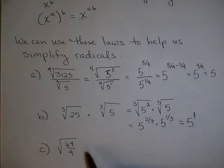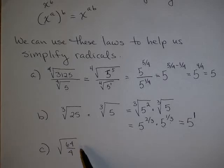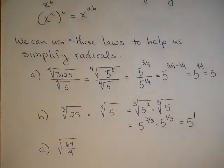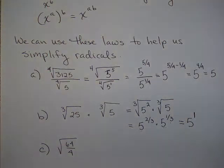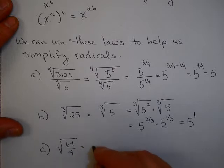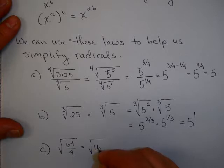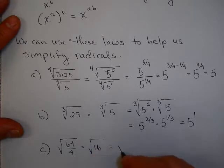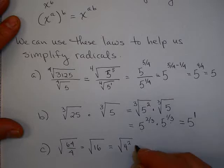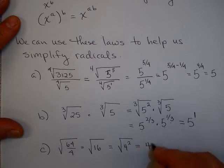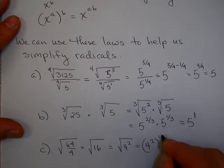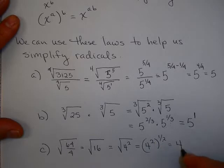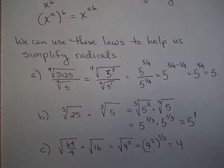You might want to take a moment to pause the video and see if you can do this one. You can do this a lot of ways, both with and without rational exponents. Using rational exponents, 64 divided by 4 is 16. 16 is 4 squared. So I can think about that as 4 squared to the 1 half. Using my laws of exponents, I get the answer 4.